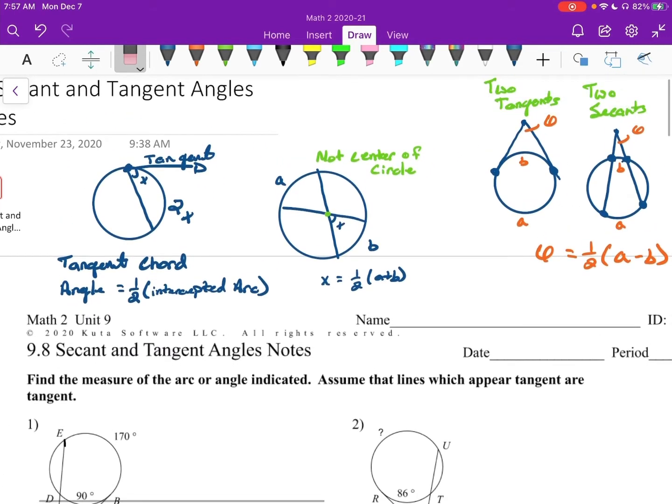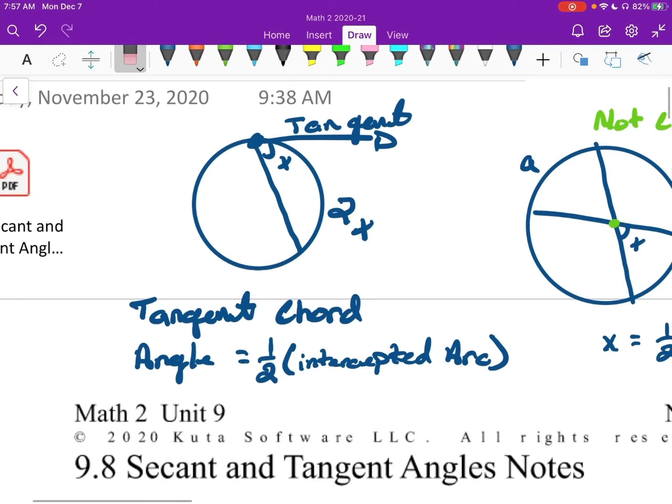So we have some different formulas that we're going to need to take care of first. Starting off, we have a tangent and a chord that are touching. So here's my tangent. Here's my chord. And they make an angle x. The arc that they make is going to be 2 times x. The arc is called the intercepted arc. It's the arc they make. So we could say the angle is one half the intercepted arc. Or you could say the intercepted arc is 2 times the angle.